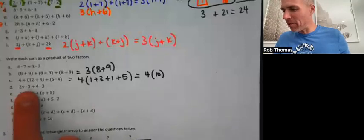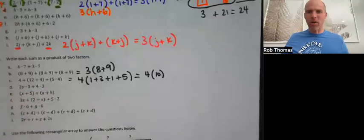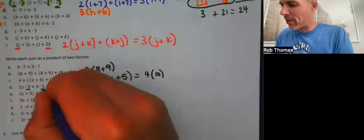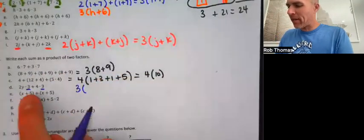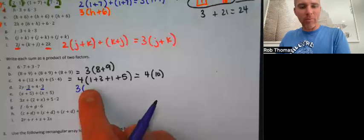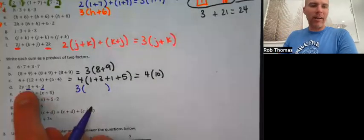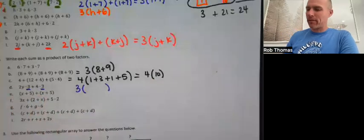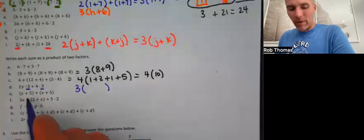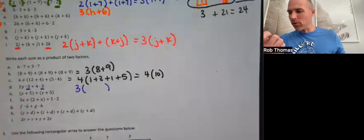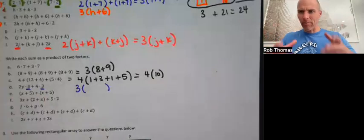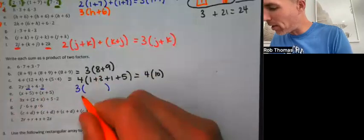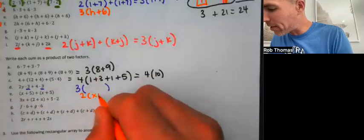The next one: 2Y×3 plus 4×3. That one's more obvious — both terms have a factor of three. Factor out the three, and put in the parentheses what's left after dividing 2Y×3 by 3 and 4×3 by 3. For problem E, we've got two little groups of (x+5) — so just combine them. One (x+5) plus another (x+5) is a total of two (x+5).